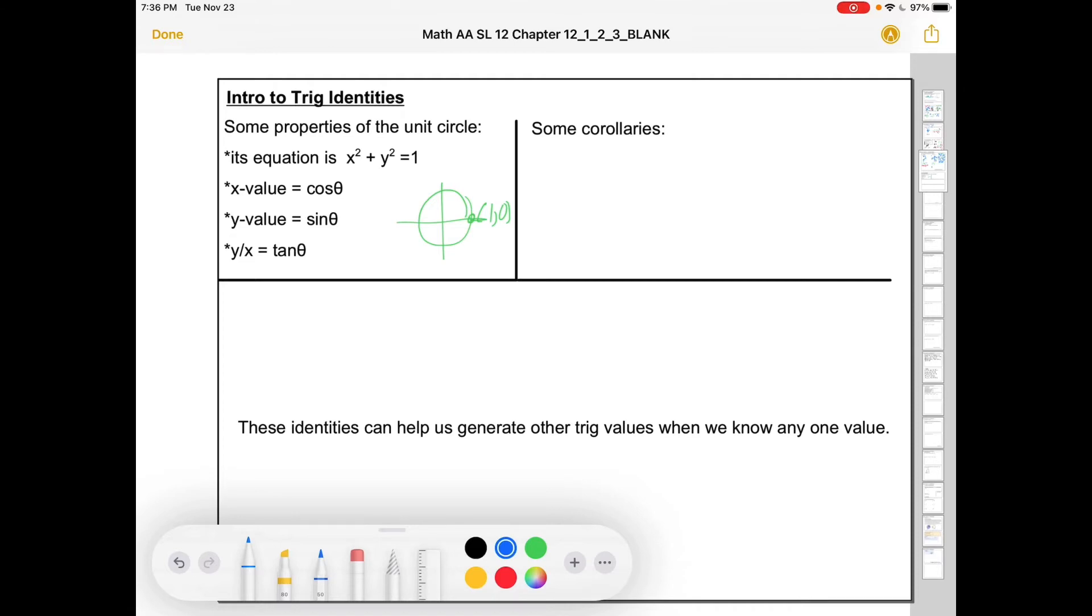So given those properties, here are some corollaries. And corollaries are things that follow from a theorem. The theorem is the big thing or the big property that you prove, and then you get these offshoots of things that therefore must be true.